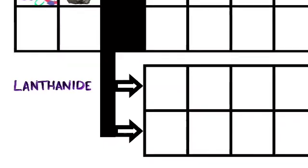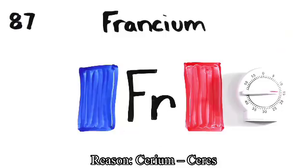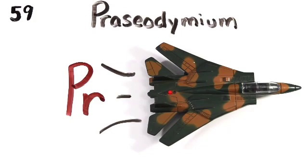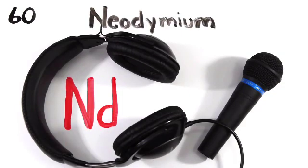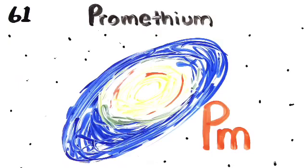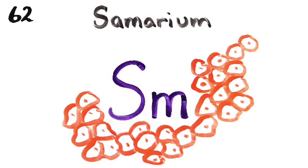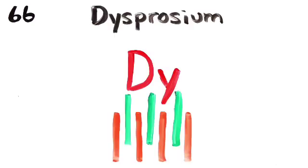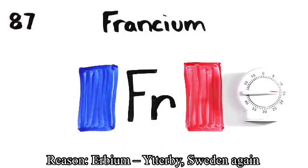Lanthanum, Cerium and Praseodymium, Neodymium's next to Promethium, then 62's Samarium, Europium, Gadolinium and Terbium.